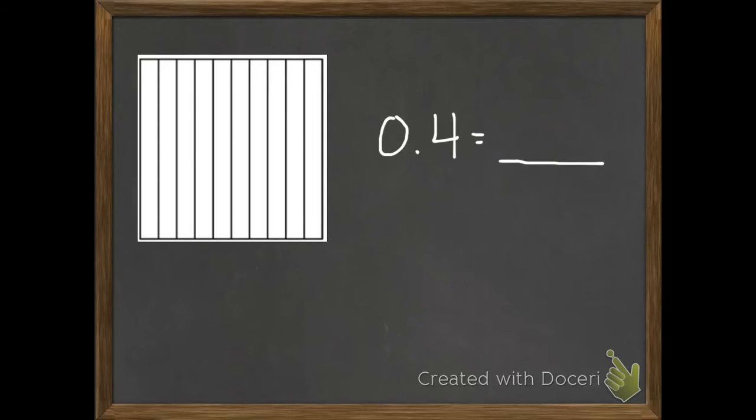So, your picture should look like this. One, two, three, four-tenths are shaded in. Now that we've shaded in our model, they want us to write four-tenths as a fraction. So four-tenths equals four-tenths.